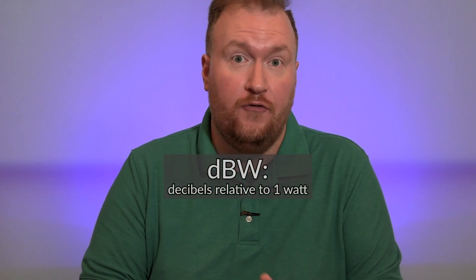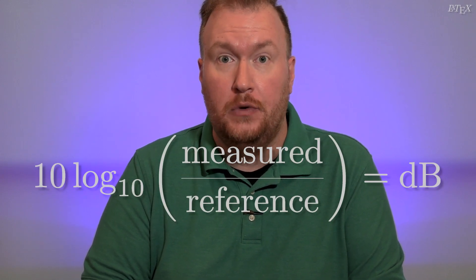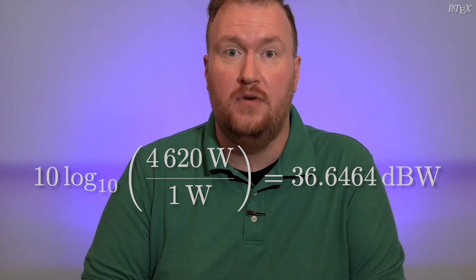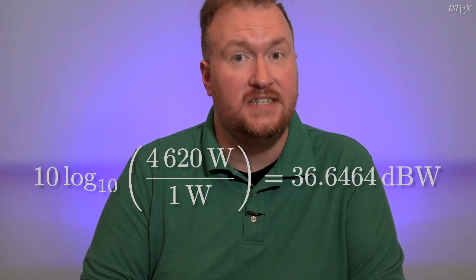Now, how do I multiply my transmitter power output of 4.62 kW by negative 2.5859 dB? How do you apply a logarithmic equation to a fixed value? I'll tell you a secret — you can take one of these fixed values, like 4.62 kW, and convert it to decibels. You just need to pick a reference value. How about getting 4.62 kW in decibels relative to 1 watt? That one's called dBW. The formula for calculating dB for power figures is: dB equals 10 times the base-10 logarithm of your measured value divided by your reference value. Since our measured value is 4,620 watts and our reference value is 1 watt, the formula is 10 times the base-10 logarithm of 4,620 divided by 1. Work through this equation and you'll find that 4.62 kW is approximately 36.6464 dBW.